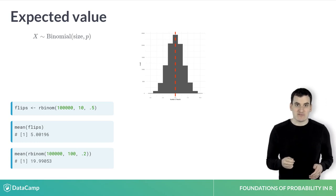As you might notice from these examples, there's a general rule. We can get the expected value of a binomial distribution by multiplying the size, or the number of flips, by the probability each is heads.